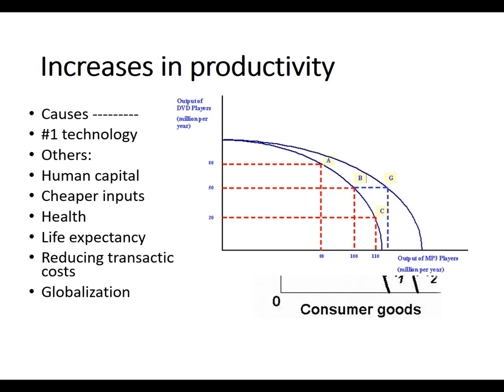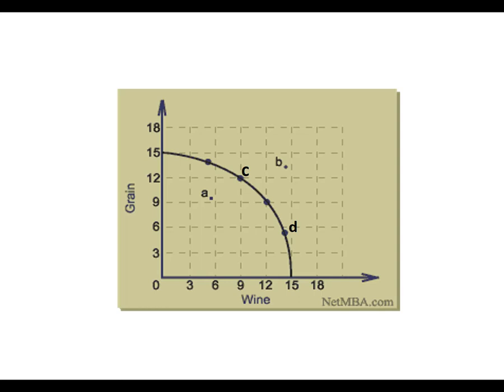Here's an example graph showing output of DVD players versus output of MP3 players. There's been an increase from the old production possibility frontier to a new one, but it has only affected the ability to produce MP3 players — the DVD player endpoint is the same on both curves. Something happened in the production of MP3 players to increase what's possible. You can also read opportunity costs from this graph — for example, what is the opportunity cost of moving from point C to point D?